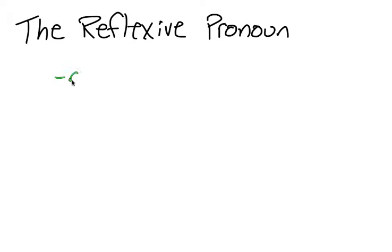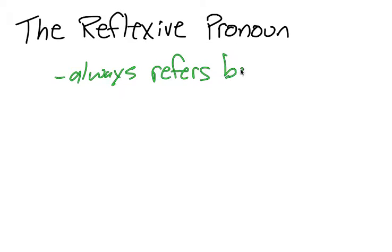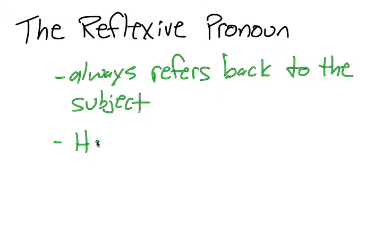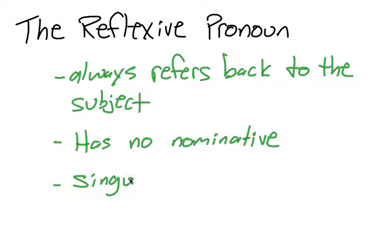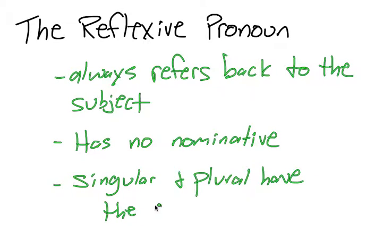The reflexive pronoun always refers back to the subject of the sentence. Therefore the reflexive pronoun has no nominative case forms. Also, the singular and the plural have the same forms — there's no difference between the forms of the singular and the plural.